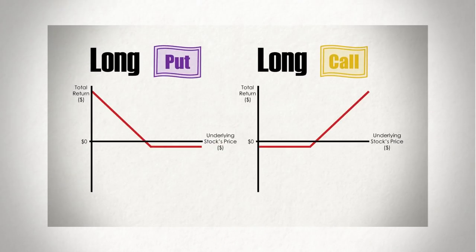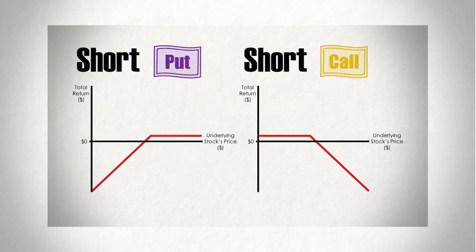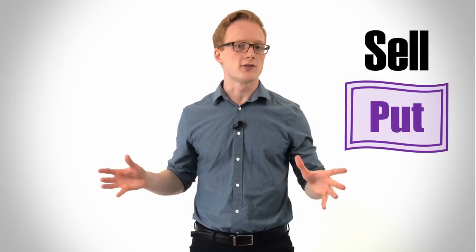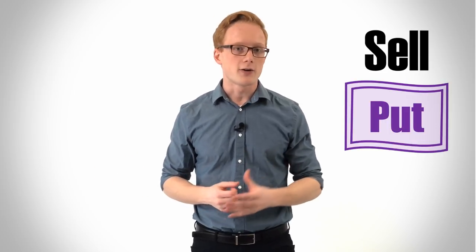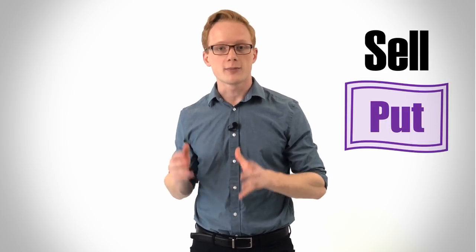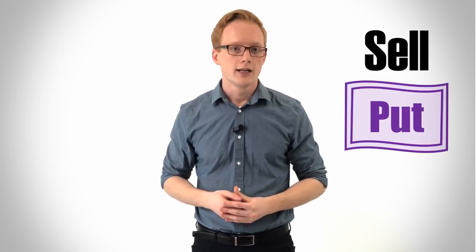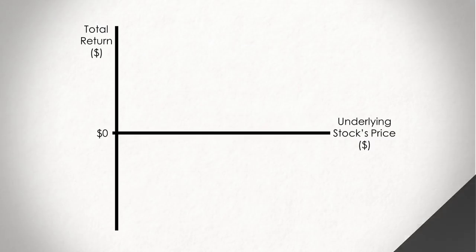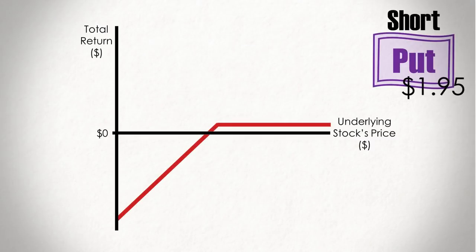However, if you remember from the options video, we can actually invert the slope if we take a short position on the option. In other words, we are going to sell a put option, promising another investor that should they choose to do so, we will buy a stock of plain bagel co from them at the predetermined strike price in three months. This means that rather than paying a premium, we actually earn a small amount from the other investor. Hence why our upside is limited to the premium we receive.